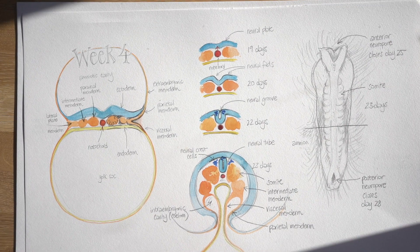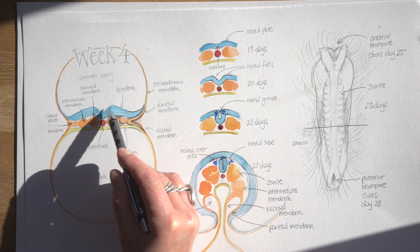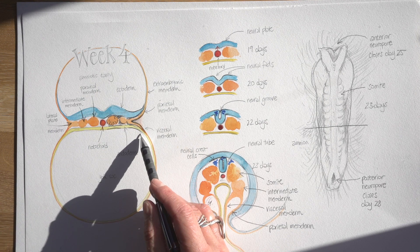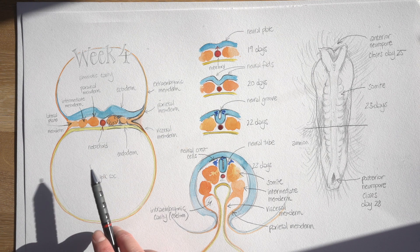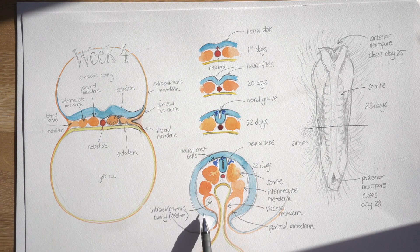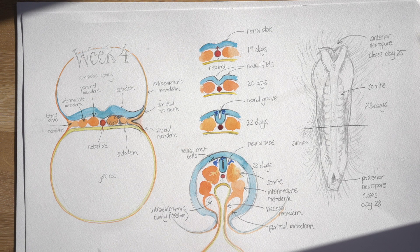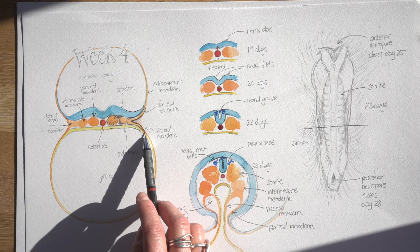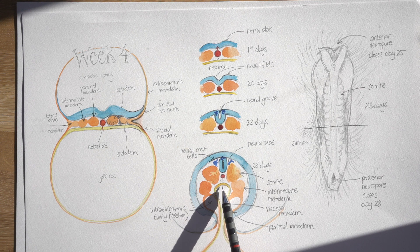This was from the week four video where we looked at how that flat disc bent around at the edges to enclose a tube of endoderm inside the embryo. By the time you get to this stage, you can see that the blue layer — the ectoderm — which starts off flat, is now wrapping around the outside of the body of the embryo, and that's going to form the epidermis. We can also see that the yellow endoderm, which is continuous with the lining of the yolk sac, has been pulled right inside the body of the embryo, and that part is going to be part of the gut tube. And then the orange is the mesoderm.